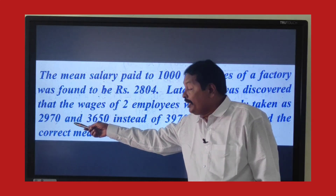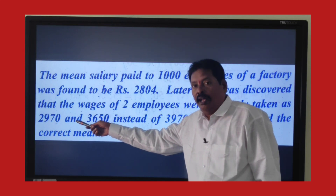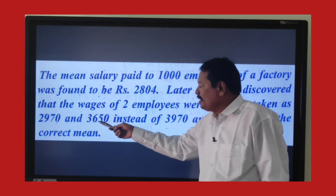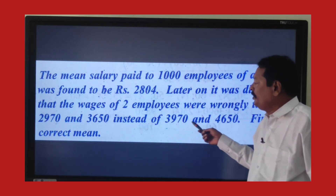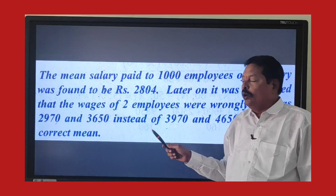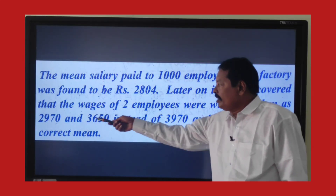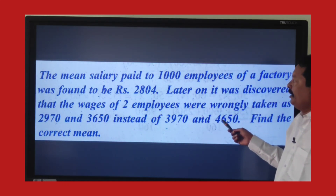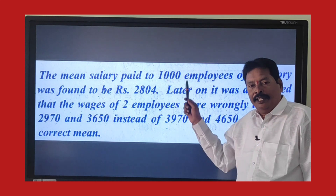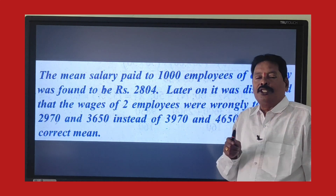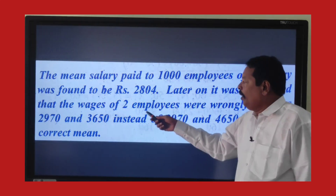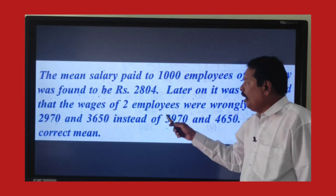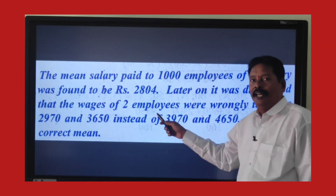The calculator has taken 2,970 and 3,650 — these are the wrong figures. The correct figures are 3,970 and 4,650. With the above information, we have to calculate the correct mean.